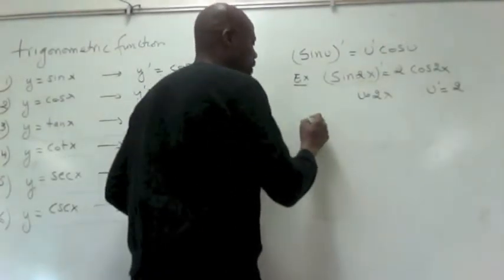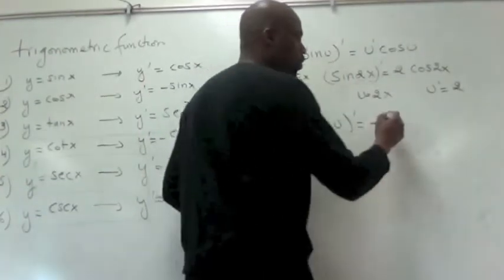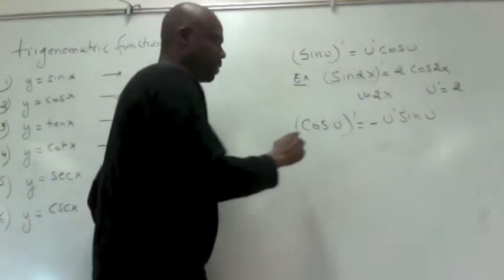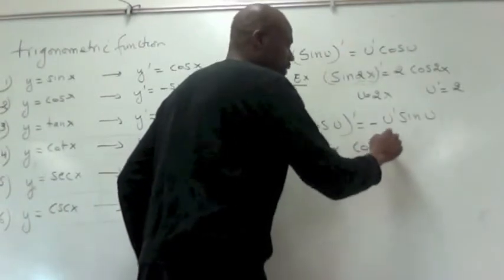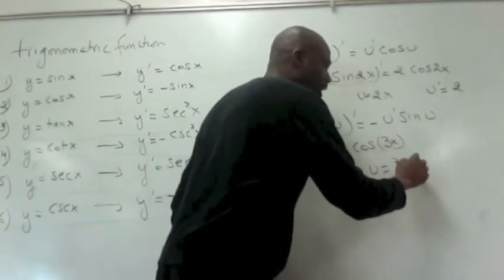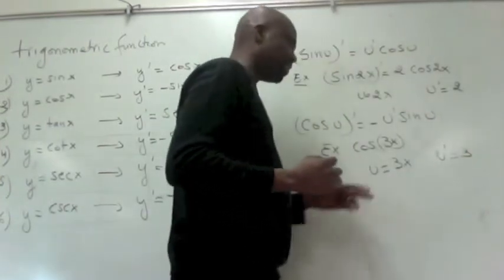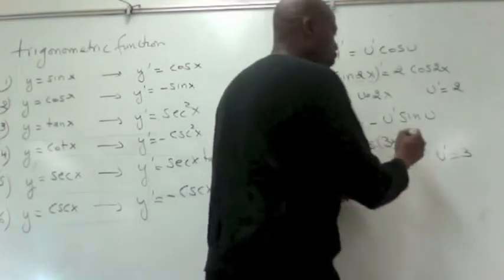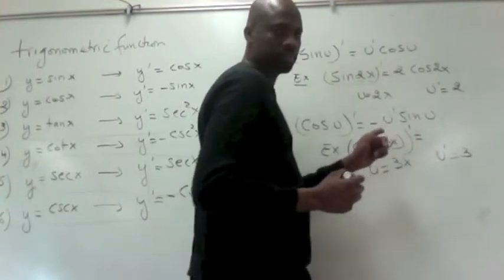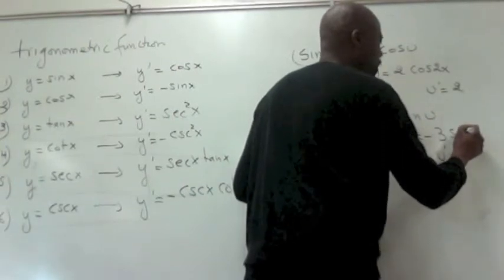Similarly, cosine of u prime equals negative u prime sine of u. Let's take a basic example: cosine of 3x. In this example, u equals 3x, and u prime is just 3, since the derivative of 3x is just 3. So plugging in, we get negative u prime sine of u, which is negative 3 sine of 3x.